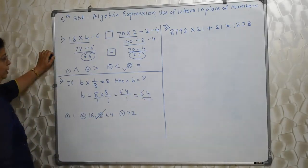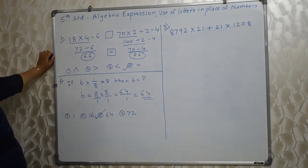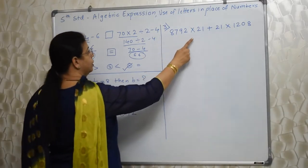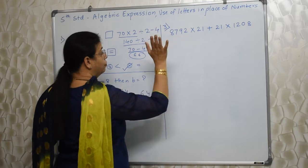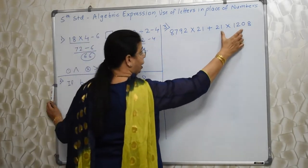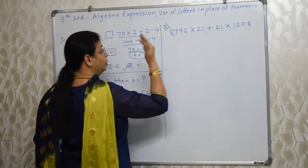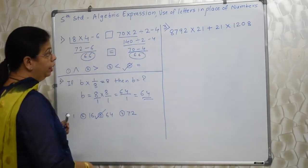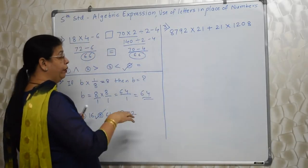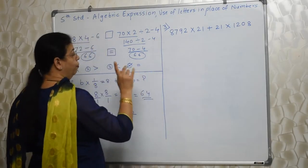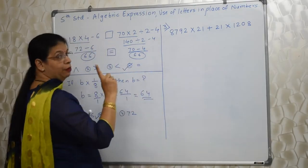Option number 3. Isn't it easy? I have seen students multiplying this, then multiplying this, then adding. Imagine how much time will go. In case you don't know the table of 21, even more time will be wasted. We have to work smartly.